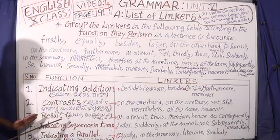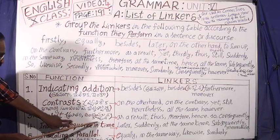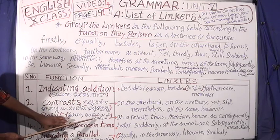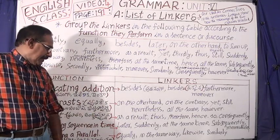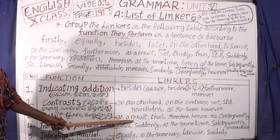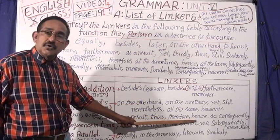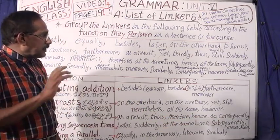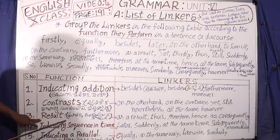The third one is the result. As a result, thus, therefore, hence, so, consequently. If you read this, you are looking at the result linkers. We can see the results of the result linkers.